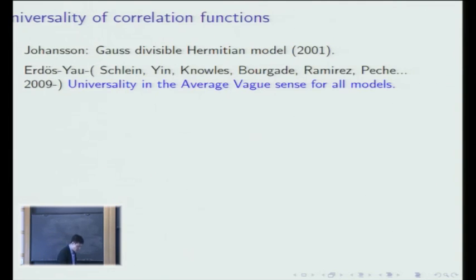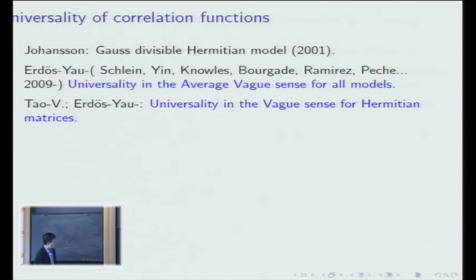So, let me mention a few important works in this direction starting with Johansson's work. He proved the universality of correlation function for Gauss divisible Hermitian complex matrix. So you take a random complex matrix and you add a portion of Gaussian noise to it. And the important thing is that the portion has to be of order one. And then, Johansson proved that this is true. There is a very impressive sequence of papers led by Erdős. Now, you have many co-authors. I apologize if I forget some co-authors. There's a very long sequence of papers and basically establish the universality in the average sense for all models. Even for models beyond this talk, there are more general models, which are also true.